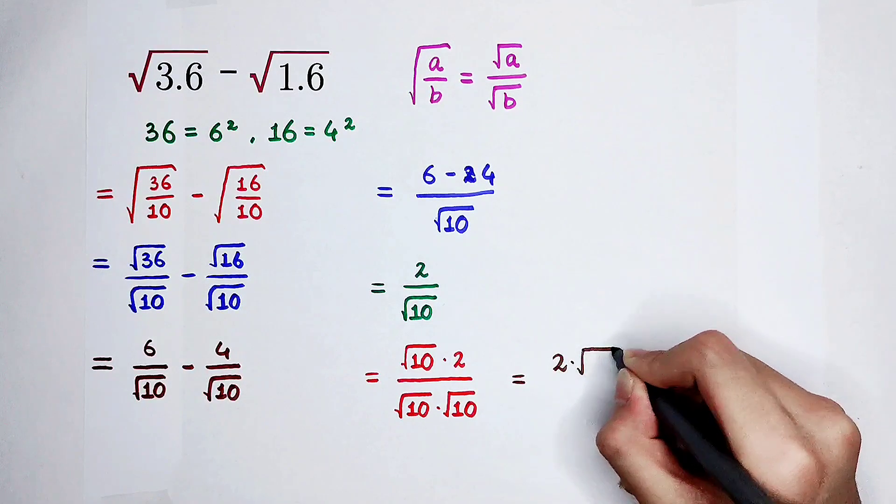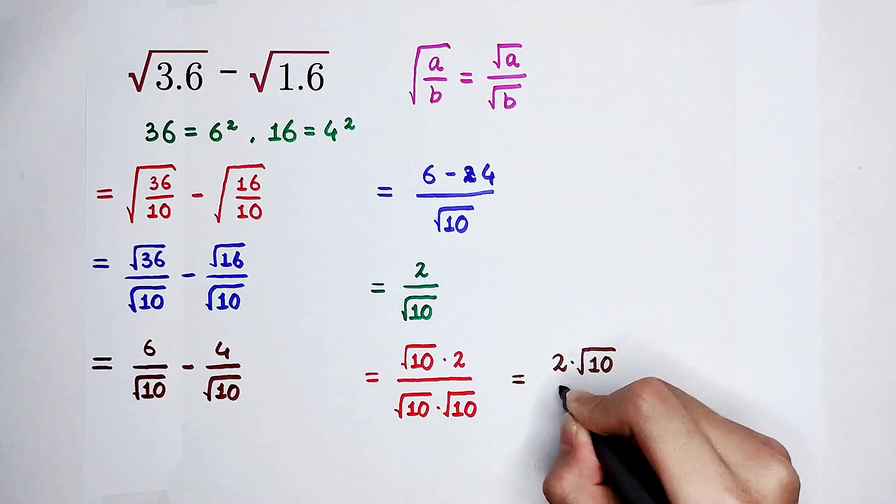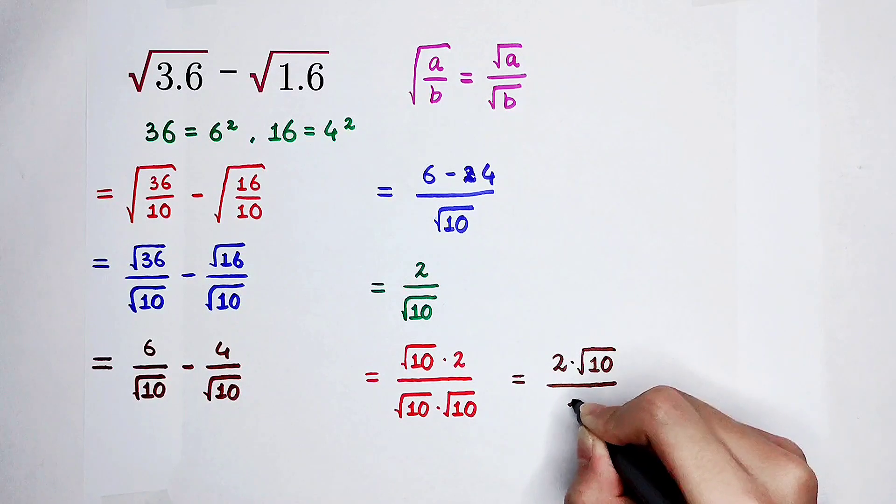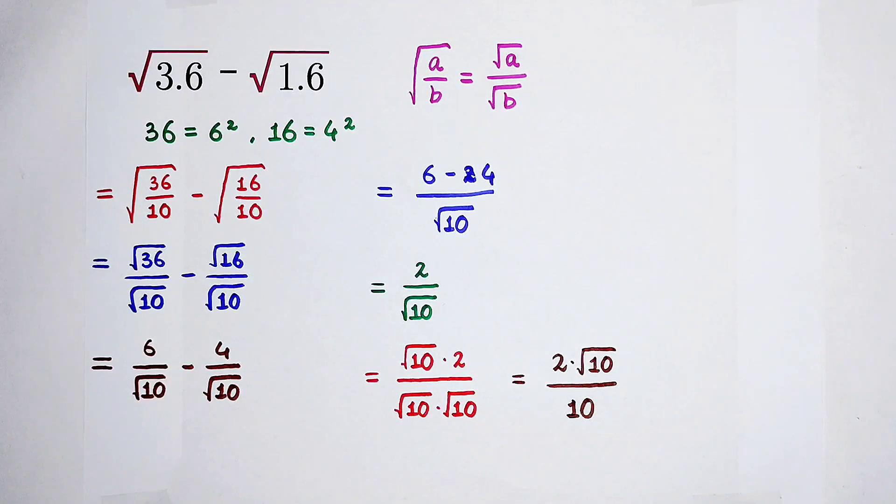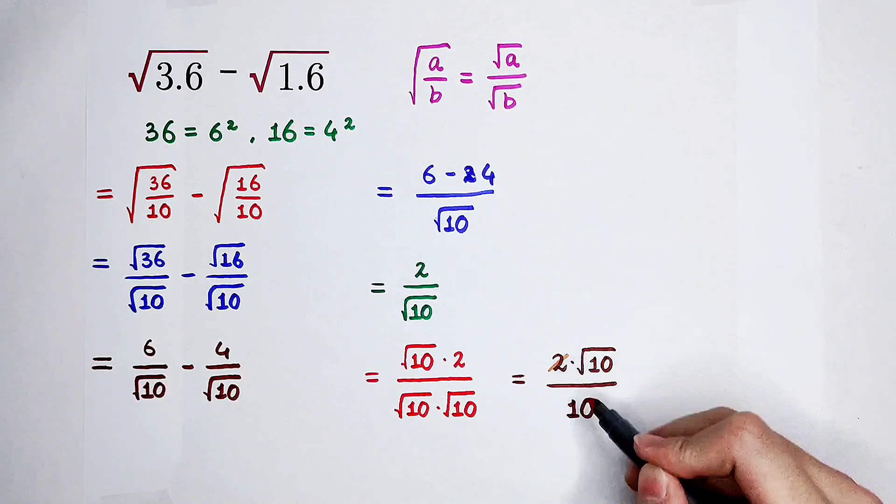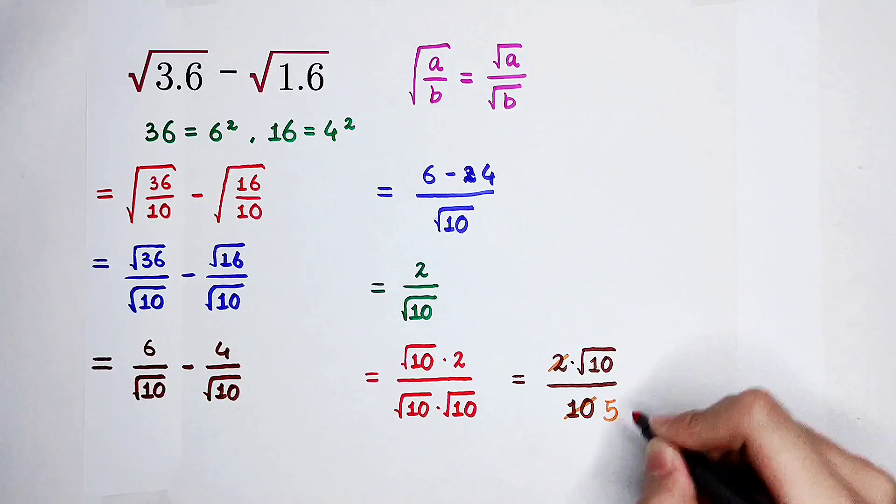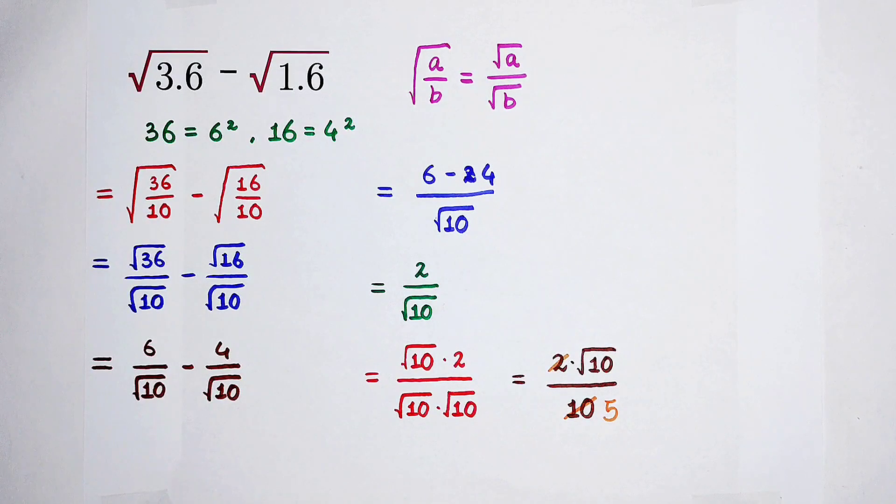2 times square root of 10, all divided by 10. Simplify. The greatest common factor of 2 and 10 is 5. So there is a 5 on the denominator.